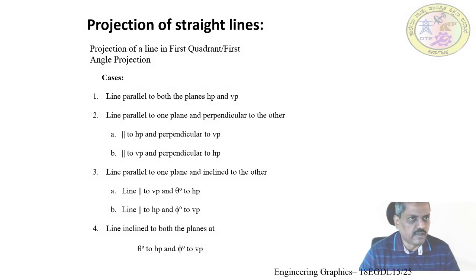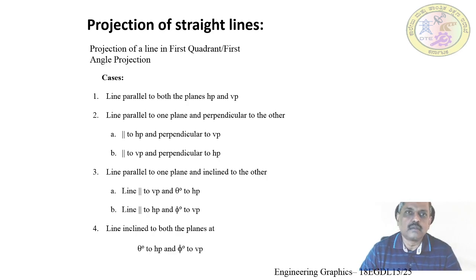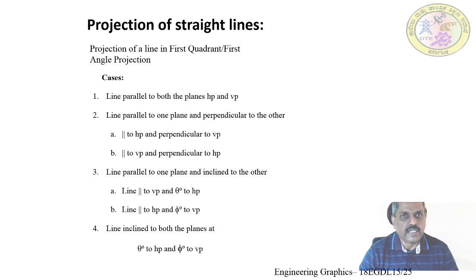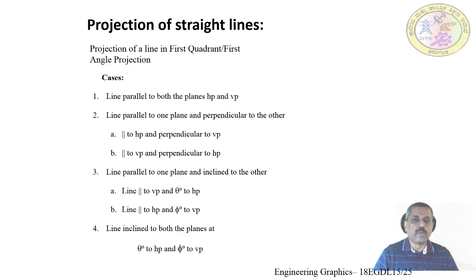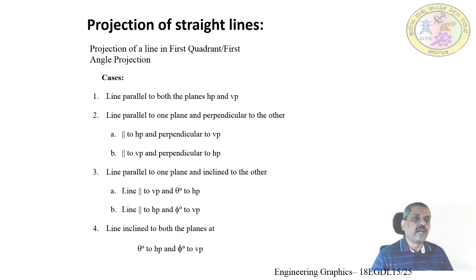Now we move on to projection of straight lines after learning projection of points in the previous session. Line is a very important aspect of engineering drawing. Here we deal with only straight lines, not curved lines. A point can be defined as an entity which has got its location but no dimension. A line can be defined as a point which moves along a straight path, or in other words, it is the shortest distance between any two points, indicated by its end points. There are thousands of other points in between, but we consider it as a series of points put together side by side, with only the end points and the midpoint of primary importance.